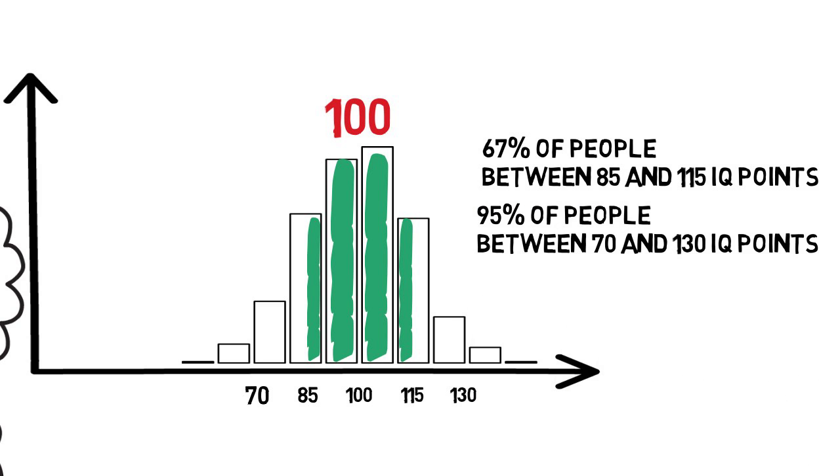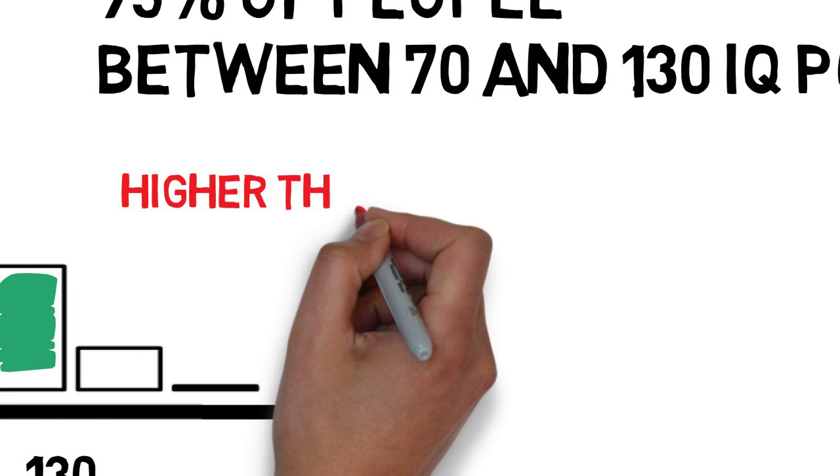Approximately 95% of people can be found within two deviations. It means between 70 and 130 points. We call these people average in a wider sense.